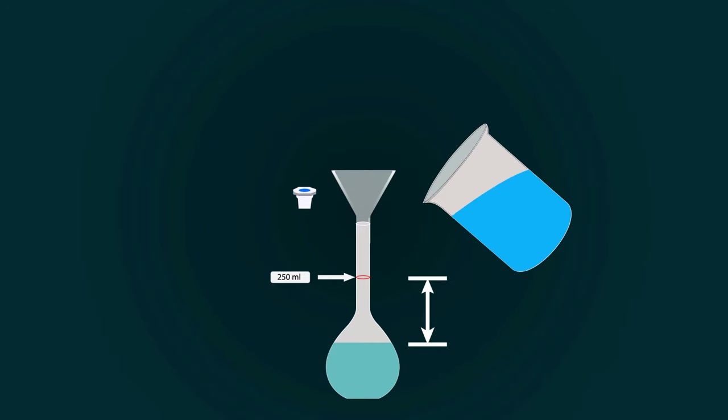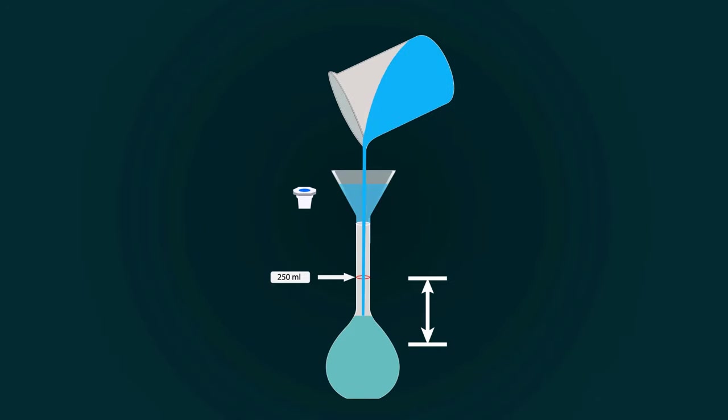So, take more distilled water into an empty beaker and pour it into the volumetric flask.